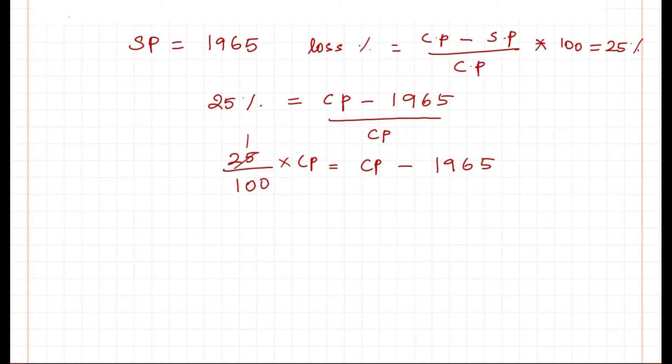So it is 25 by 100 times cost price equals cost price minus Rs.1965. Simplifying this which is 1 by 4. So cross multiplying now, 1 times CP equals CP minus 1965 times 4.